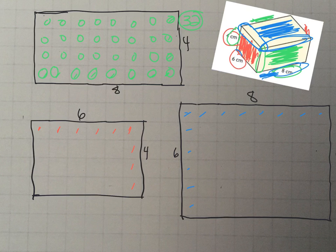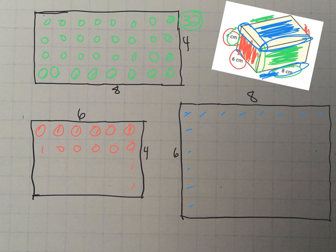On the red face, counting the squares, there are 24.